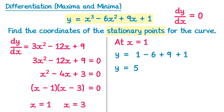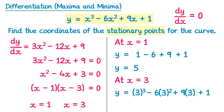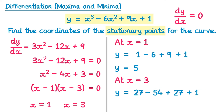Now we substitute in x equals 3: y equals 3 cubed minus 6 lots of 3 squared plus 9 lots of 3 plus 1. 3 cubed is 27, 3 squared is 9 and times by negative 6 gives negative 54, 9 times 3 is 27. Simplifying gives y equals 1. So the coordinates are: stationary point 1 is (1, 5), and stationary point 2 is (3, 1).